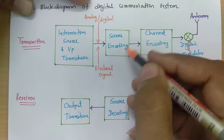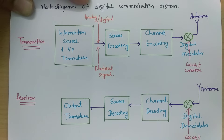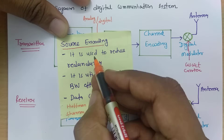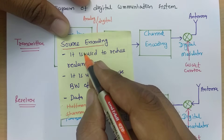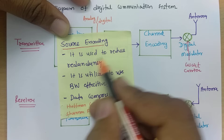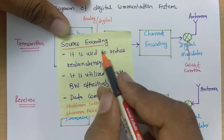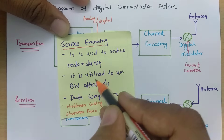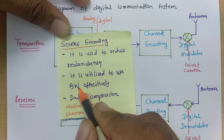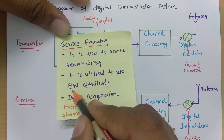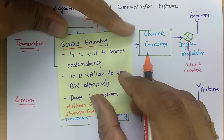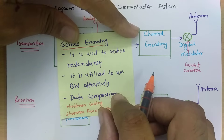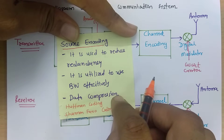The second block is source encoding. The basic task of source encoding is to reduce redundancy in the electrical signal and to use bandwidth effectively. For digital data, we can also perform data compression.